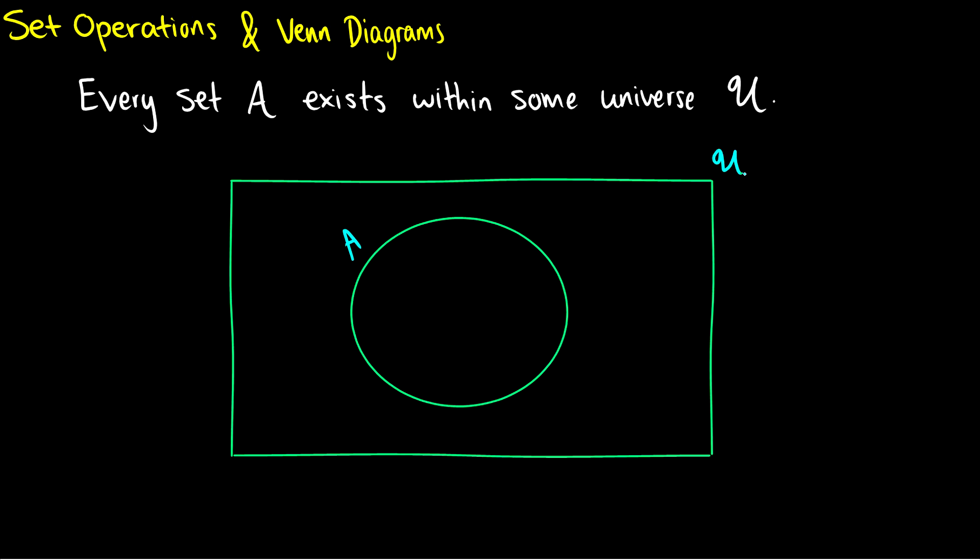So if we think of our sets as circles, it exists in some universe and we'll usually draw this universe with a box to signal that maybe this universe is for instance the set of integers or maybe the set of real numbers or maybe just the set of positive integers, and then A lives inside that universe.